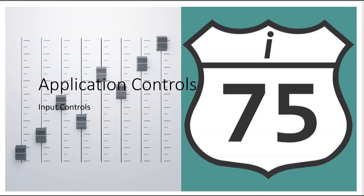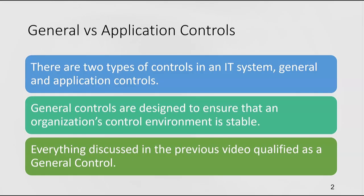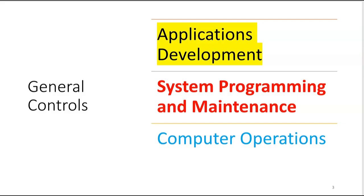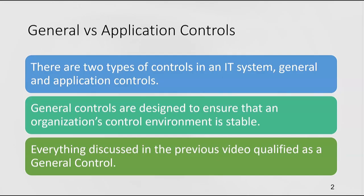Let's take a look at application controls and in particular input controls. There are two types of controls in an IT system: general and application controls. General controls, which we covered in the previous video, are designed to ensure that an organization's control environment is stable. That's where we talked about the segregation of duties between applications development, system programming and maintenance, and computer operations.